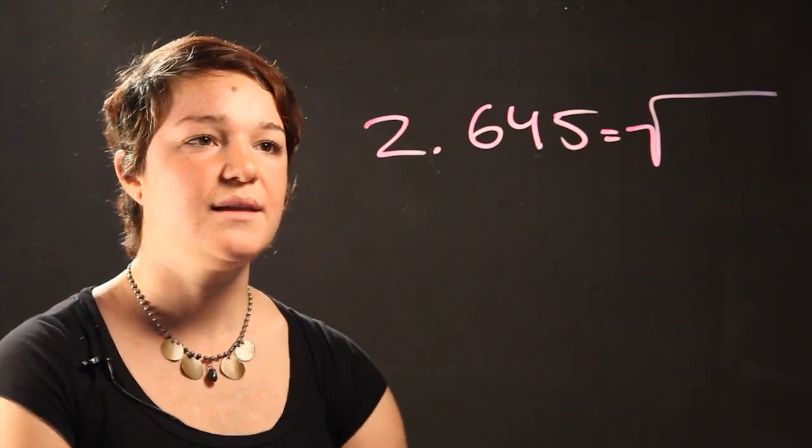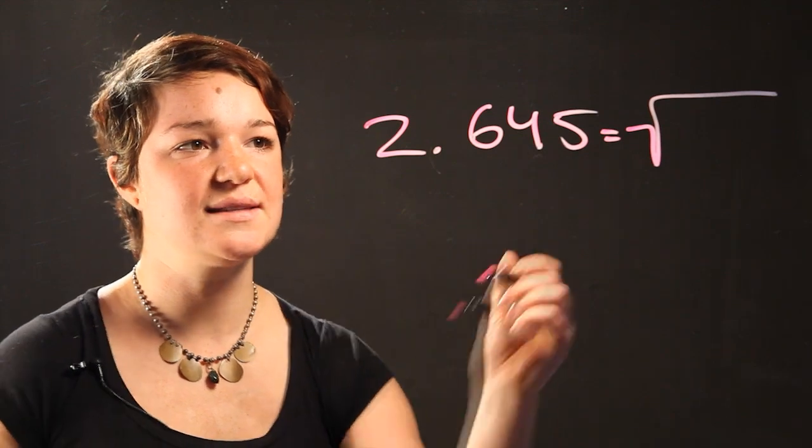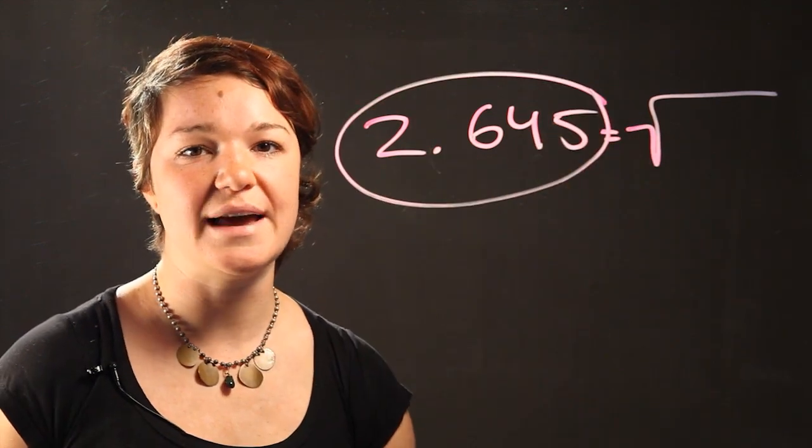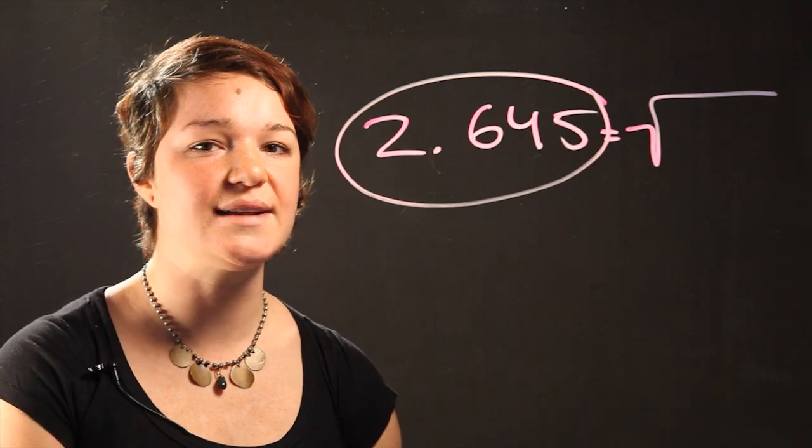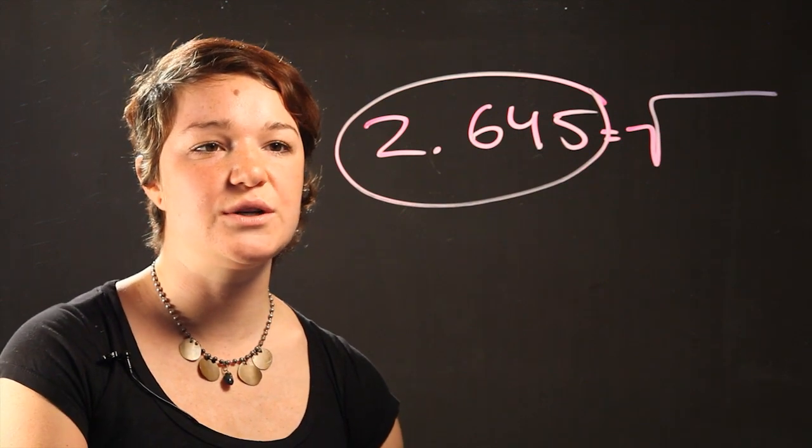So the easiest thing to do is just to take this number and keep multiplying it by itself until you get a number that's close to a whole number.